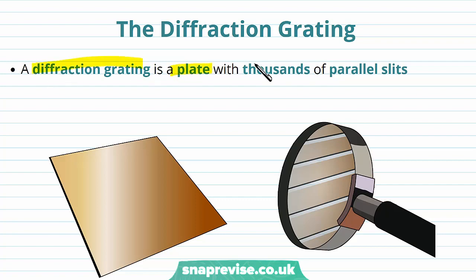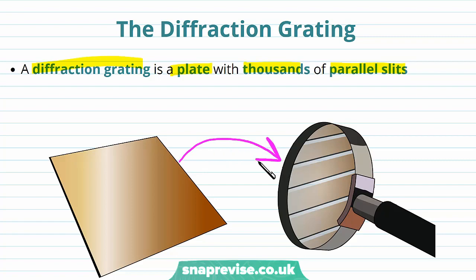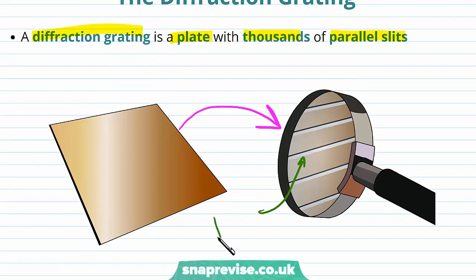The diffraction grating is a plate with thousands of parallel slits. Here we have a plate that's a diffraction grating, made up of lots of tiny slits that we can't actually see with the naked eye because they're so small. If we look at it in more detail we can see the tiny slits in the plate.